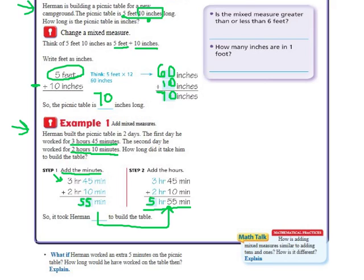So it says down at the bottom, what if Herman worked an extra 5 minutes on the picnic table? So we want to add 5 more minutes to this. How long would he have worked? So, from 5 hours and 55 minutes, I add an extra 5 minutes. That would take me to 5 hours and 60 minutes.